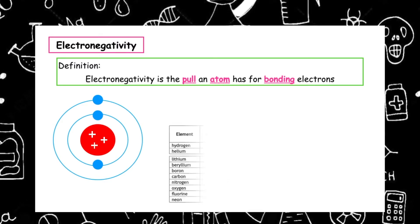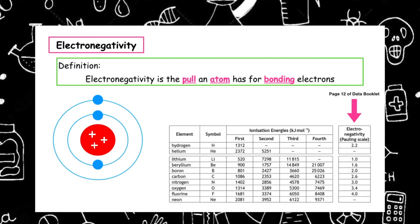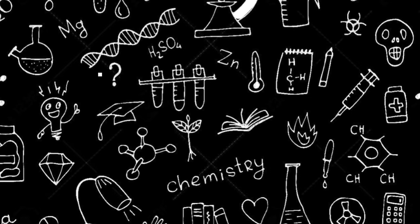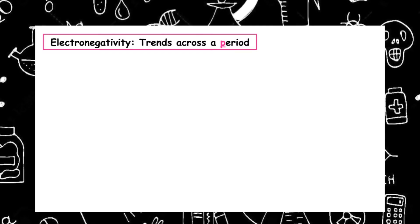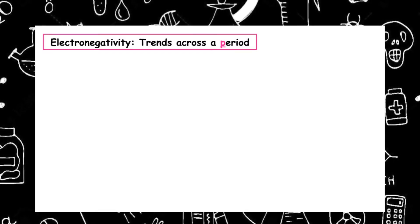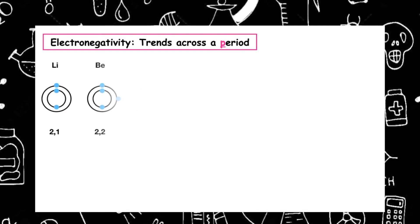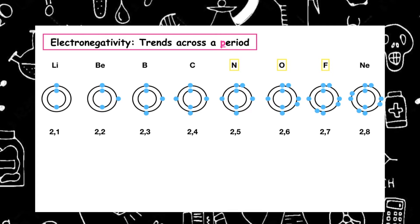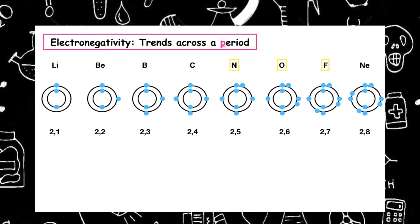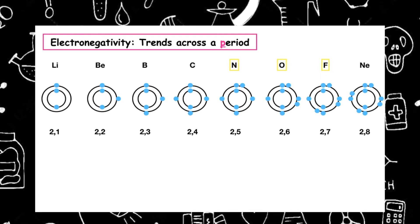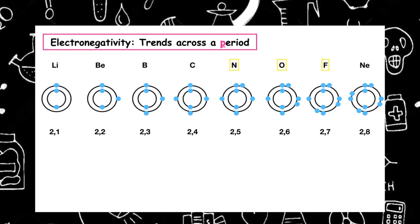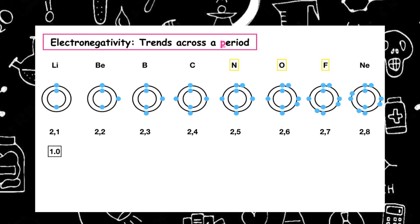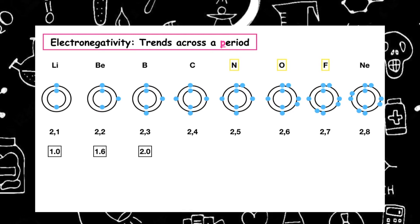The electronegativity values can be found on page 12 of your data booklet. Let's look at the trends across a period. If we draw the electron arrangement diagrams for lithium to neon, we can see that they all contain two shells and that the number of electrons increases as we go across. But because the number of shells remains the same, that can't be making the difference.